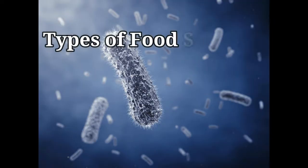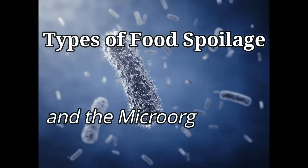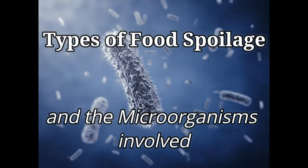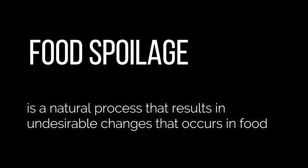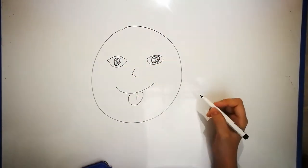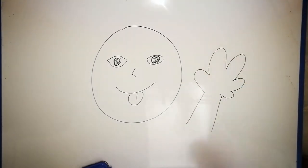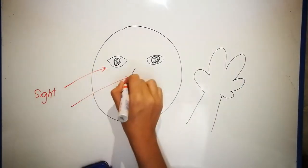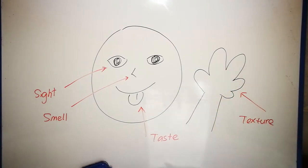Now let us move on to the types of food spoilage and the microorganisms involved. Food spoilage is a natural process that results in undesirable changes that occur in the food. Food spoilage can be detected usually by sight, smell, taste, and texture.